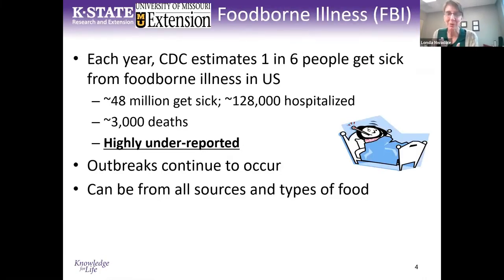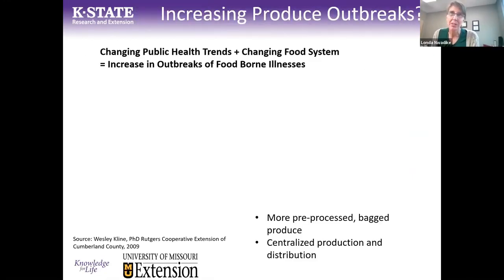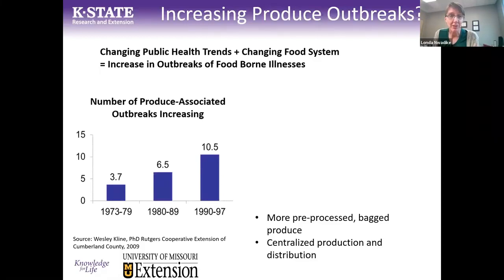We also need to understand that foodborne illness does happen. Many of you have probably seen these statistics, but we know foodborne illnesses occur and people get sick. The big thing is that it's highly underreported — many of us have probably had some stomach upset or diarrhea that might have been due to a foodborne illness. Foodborne illness can happen from any type of food. There is an increase in produce outbreaks, and there are a number of reasons for that — our food system is changing, with more pre-processed bagged produce through centralized buying, an increase in produce consumption, more people with compromised immune systems, and more resistant pathogens.